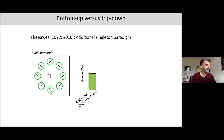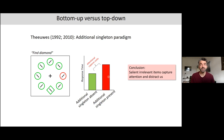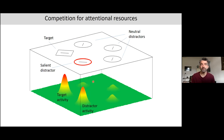A prominent example is the additional singleton paradigm, which illustrates the battle between top-down and bottom-up attention. Participants had to find a diamond-shaped target and report the orientation of the line within. In some trials there was an additional color singleton — one irrelevant item was unique in its color, making it very salient. Theeuwes observed much longer response times in those trials, suggesting that salient irrelevant items can capture attention and distract us.